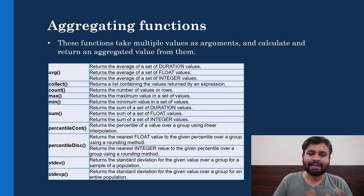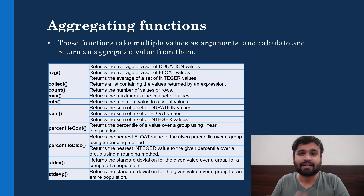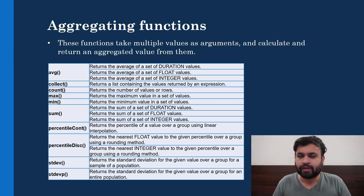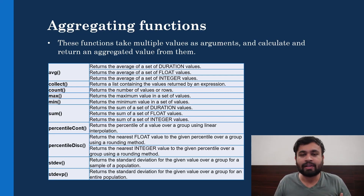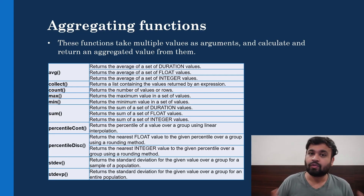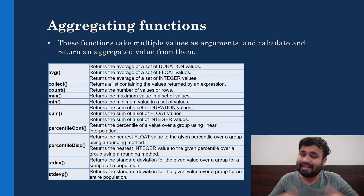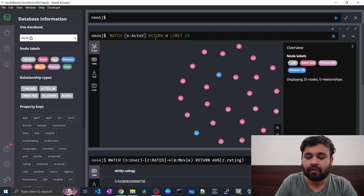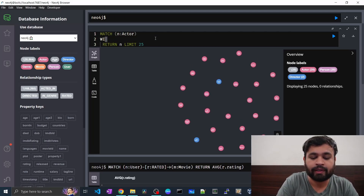The next function is collect. Collect returns a list containing the values returned by an expression. For example, if we have 10 nodes with actors and their names, and we want to get those names as a list — to iterate over them or do further analytics — collect is a great option. Let's look at a simple example.